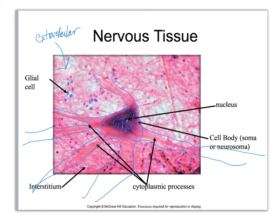The cytoplasmic processes are going to be dendrites and an axon. At this level and at this magnification, it's really difficult to distinguish them, which is why I'm using just the phrase 'cytoplasmic process' for this situation.